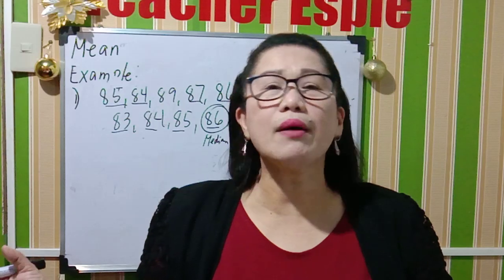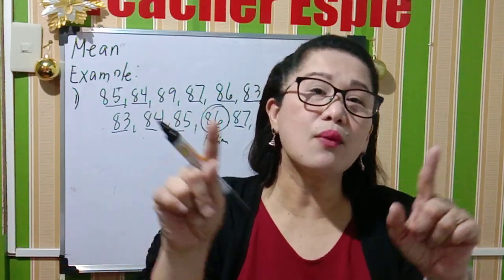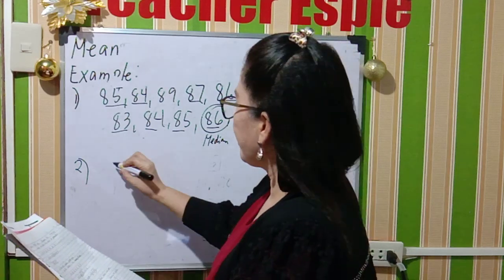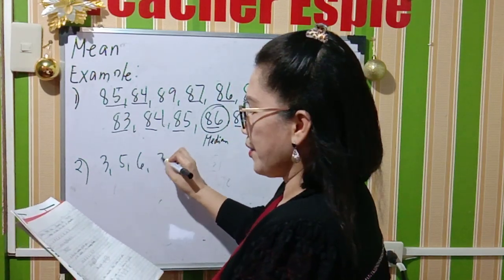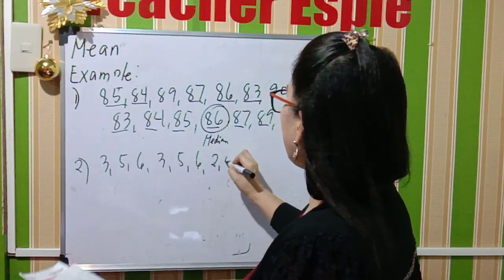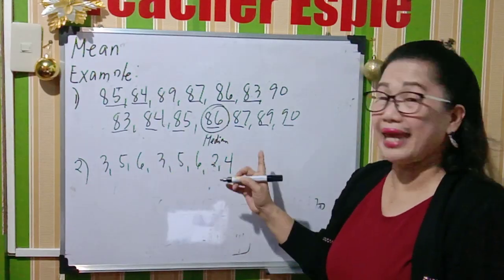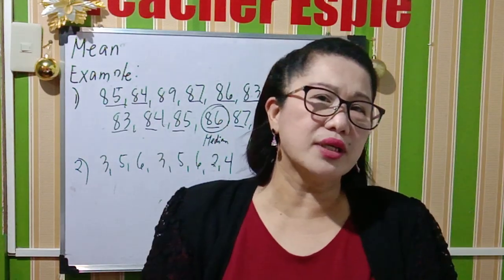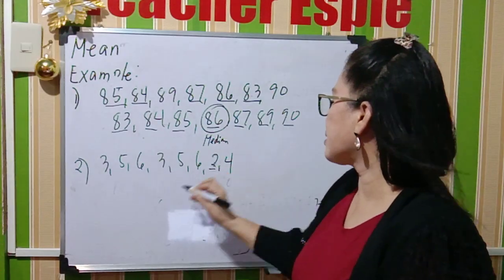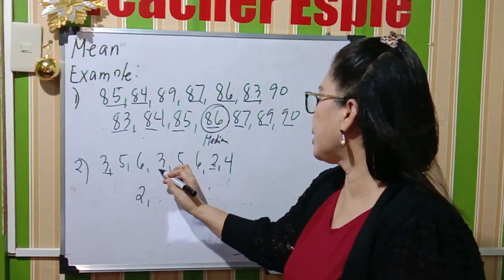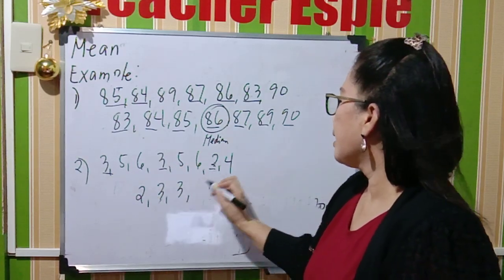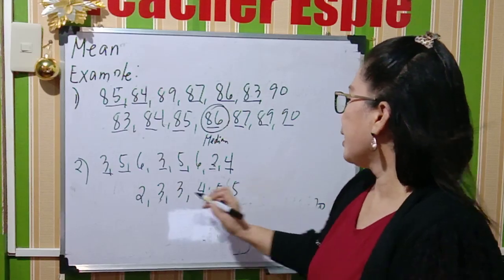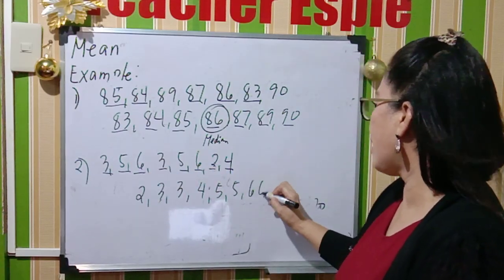Now I will give you another example for the median. The numbers are 3, 5, 6, 3, 5, 6, 2, and 4 — that is 8 values. You arrange the scores from the lowest to the highest, so: 2, 3, 3, 4, 5, 5, 6, 6.